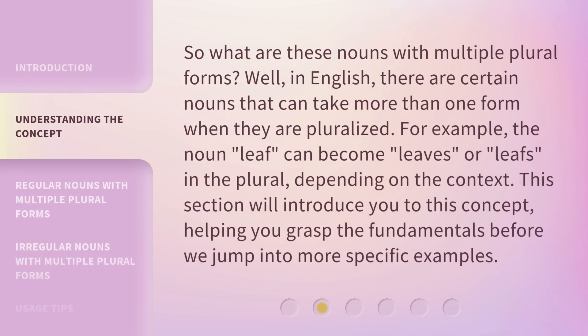So, what are these nouns with multiple plural forms? Well, in English, there are certain nouns that can take more than one form when they are pluralized. For example, the noun 'leaf' can become 'leaves' in the plural, depending on the context. This section will introduce you to this concept, helping you grasp the fundamentals before we jump into more specific examples.